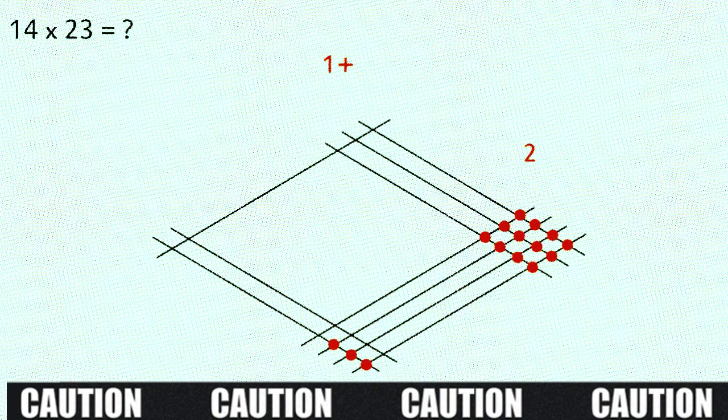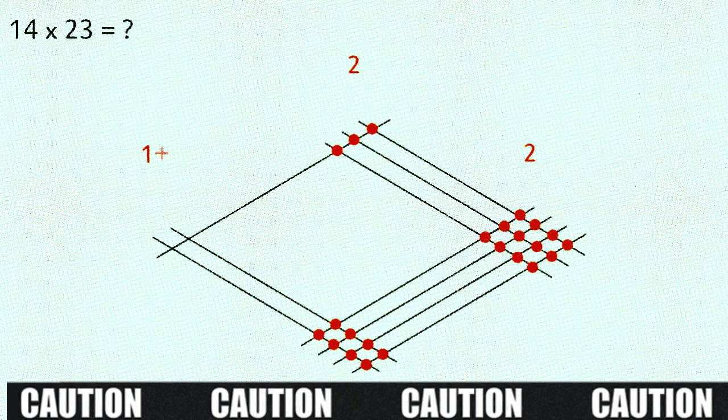So we have 1, 2, 3, 4, 5, 6, 7, 8, 9, 10, 11 dots or line crosses in this zone. We add that to the one we carried over from the last zone and that gives us 12. So now we have to do exactly the same again. Leave the last digit where it is, carry the first digit over to the next zone and add it to the number of dots in this zone. In this case 2 dots, giving us a total of 3.